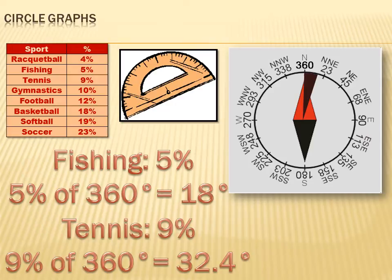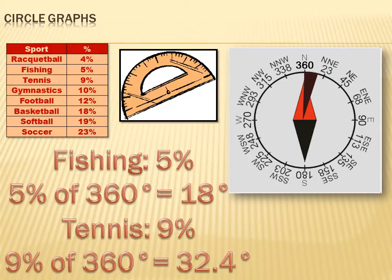Tennis represented 9% of my population as the favorite participation sport. I've got to figure out what 9% of 360 degrees is — that's 32.4 degrees. That's 32.4 degrees starting from where I left off at 18 degrees, so I use my protractor to go another 32.4 degrees around, and then I build another slice of pie right next to the first one.